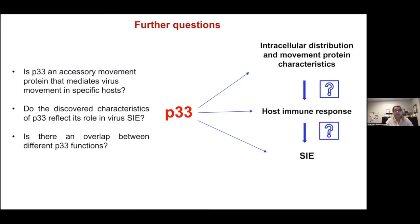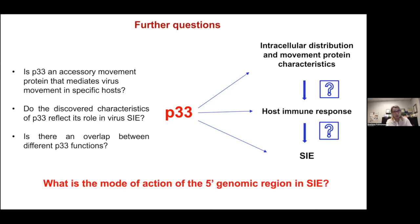We still have many questions about P33. For instance: is P33 an accessory movement protein that mediates virus movement in specific hosts? Do the discovered characteristics of P33 reflect its role in superinfection exclusion, and is there an overlap between its different functions? Besides P33, we are also very interested in understanding how the five-prime genomic region works in CTV superinfection exclusion, and this interest resulted in a new avenue of research.